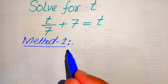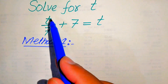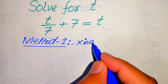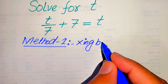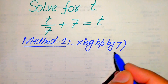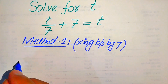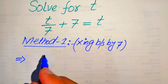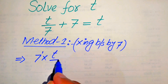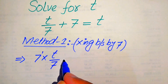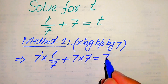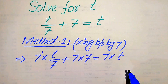In the first method we need to remove the fraction sign. In order to remove this fraction sign we will multiply both sides by 7. When we multiply both sides by 7, our equation is written as 7 multiplied by t over 7 plus 7 multiplied by 7 equals 7 multiplied by t.